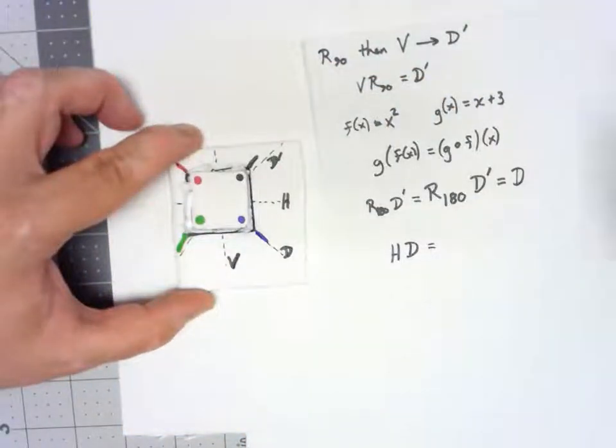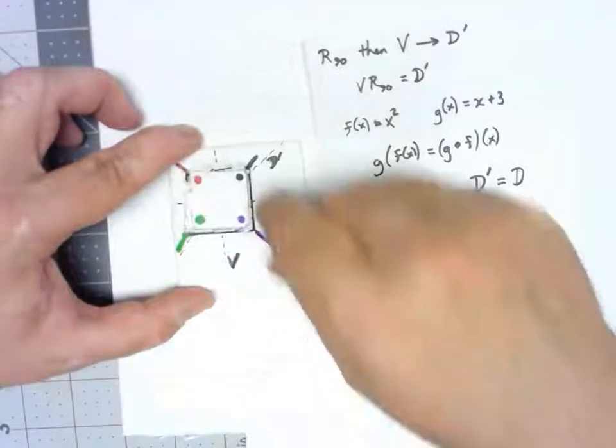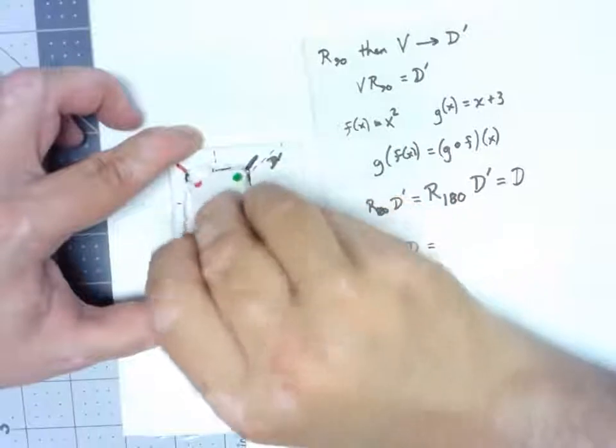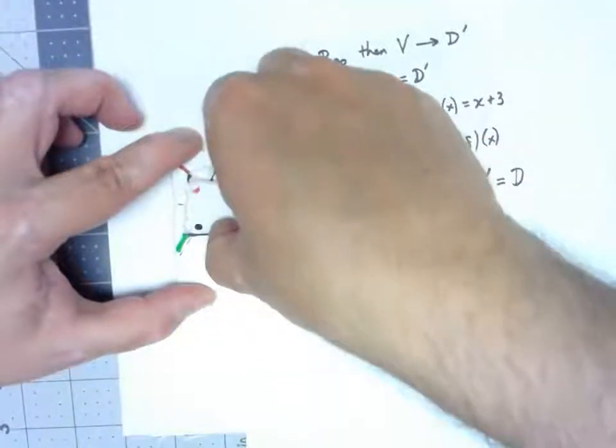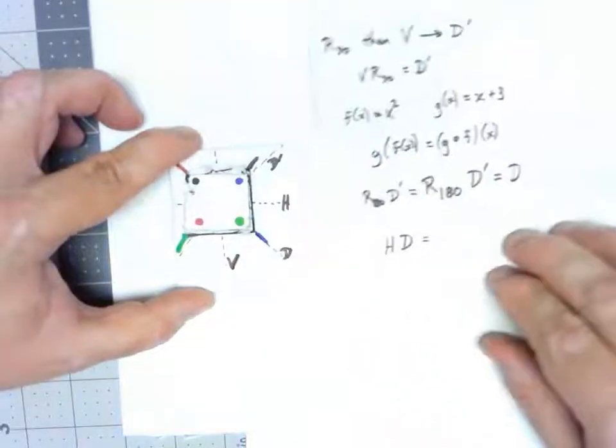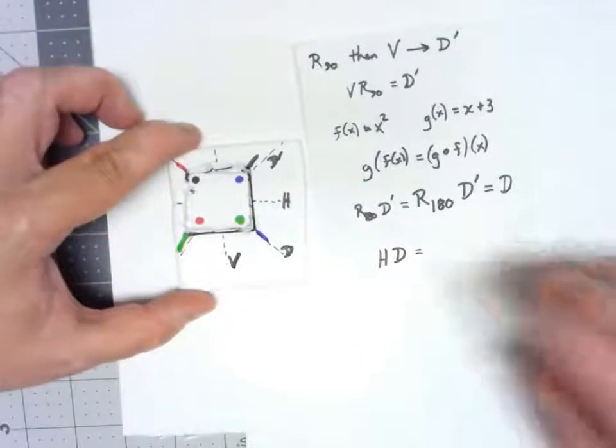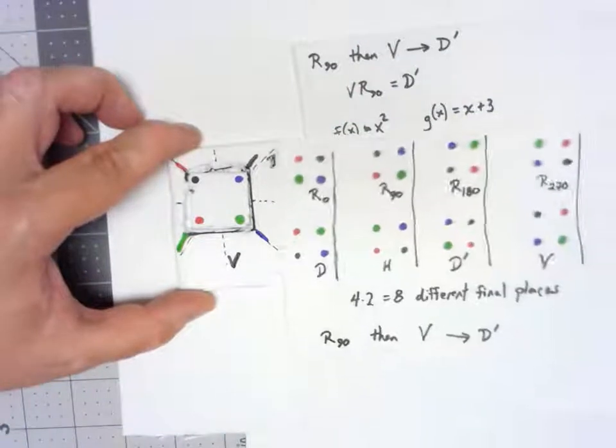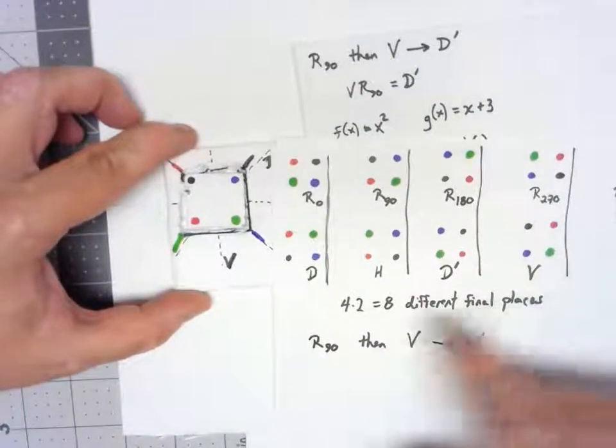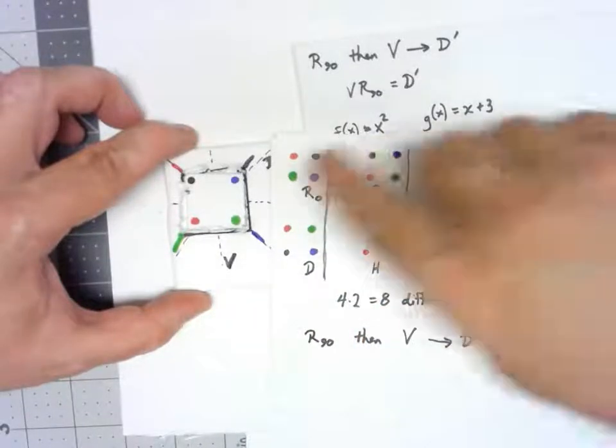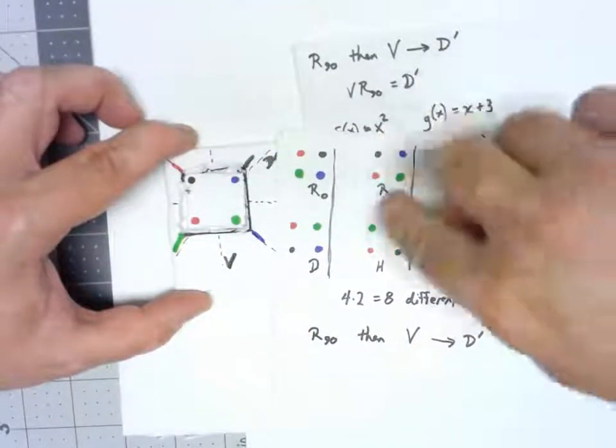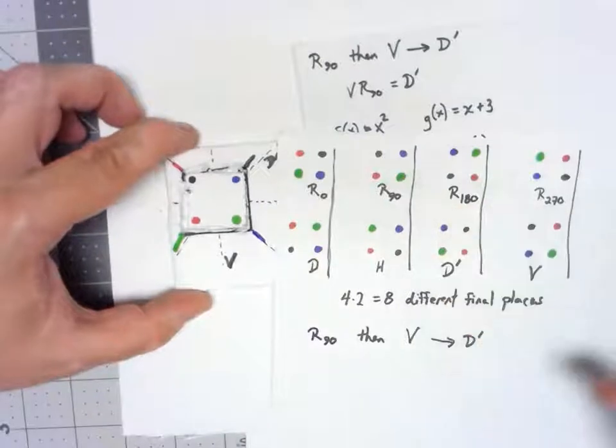Hopefully, you've paused it. You've seen what it comes out to be. Let's do it. So, flipping across the main diagonal is going to flip it this way. Flipping across the horizontal flips it top to bottom. And we end up with, if we go back to our original thing, the red's in the bottom left, so it's one of these two. The black's in the top left. That's this one. We end up with a rotation by 90.